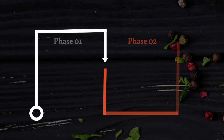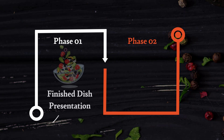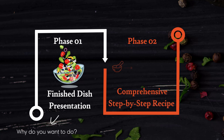There are two phases to each Cooking with Clarity session. The first is the finished dish presentation, which will be handled by Chef Kurt, who's going to walk us through these various pieces. Then I will be providing the comprehensive step-by-step recipe for how to make each dish.